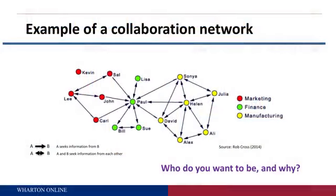Somebody you might not have wanted to be: who would you least want to be in this network? Probably pretty quickly you'd say Kevin. Kevin is pretty isolated out there — all by himself, nobody's talking to him and he's not talking to anybody. It doesn't seem like much fun to be Kevin, and Kevin does seem pretty cut off. But why might Kevin actually find this an advantageous position? Well, it's not good to be out of the network flows, but everybody's leaving Kevin alone. Maybe Kevin just gets on with his job, really enjoys what he's doing, and has plenty of time to get things done.